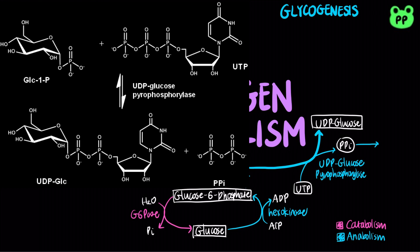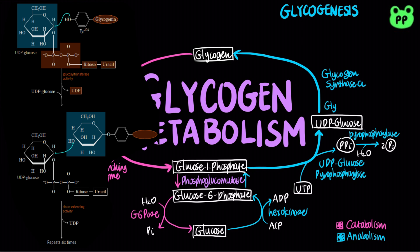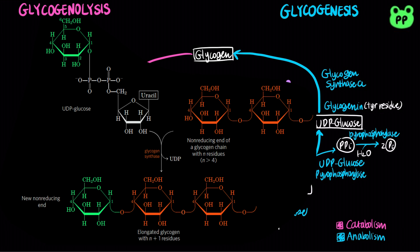Pyrophosphate is rapidly hydrolyzed into two inorganic phosphates by inorganic pyrophosphatase. Next, glycogen synthase transfers a glucose residue from UDP-glucose to a non-reducing end of a branch glycogen molecule. To initiate a new glycogen molecule, glycogen synthase requires a primer called glycogenin, which transfers a glucose residue from UDP-glucose to the hydroxyl group of tyrosine-194. After glycogenin extends about seven glucose residues, glycogen synthase can then take over.